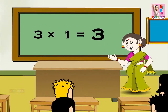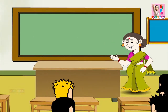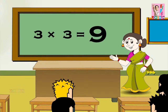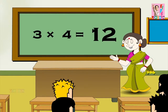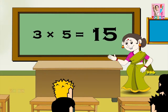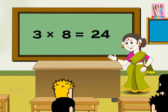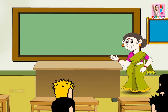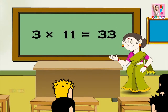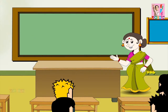3 1s are 3, 3 2s are 6, 3 3s are 9, 3 4s are 12, 3 5s are 15, 3 6s are 18, 3 7s are 21, 3 8s are 24, 3 9s are 27, 3 10s are 30, 3 11s are 33, and 3 12s are 36. And now children, it's your turn.